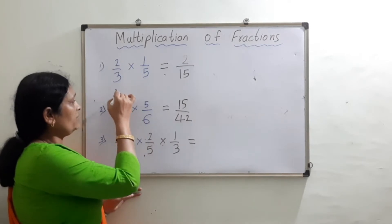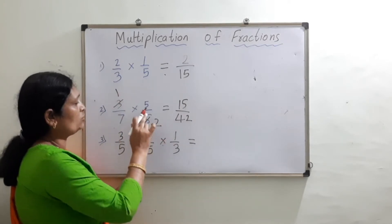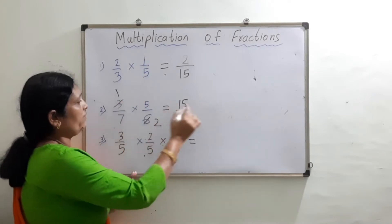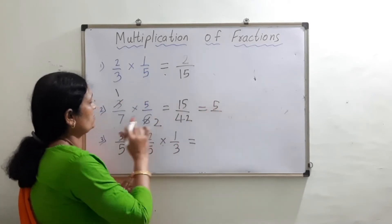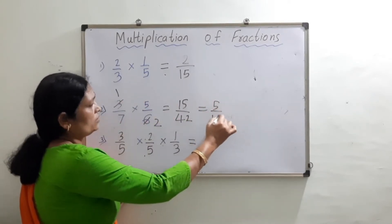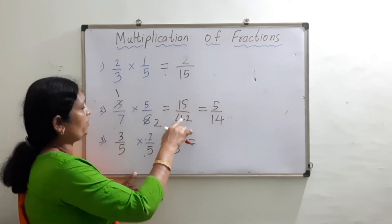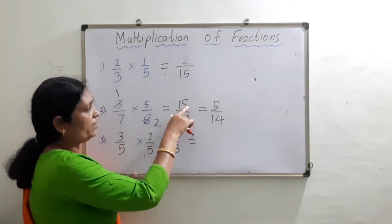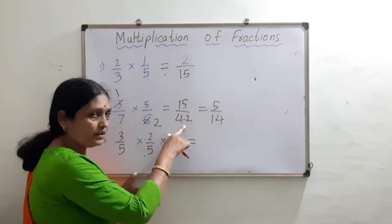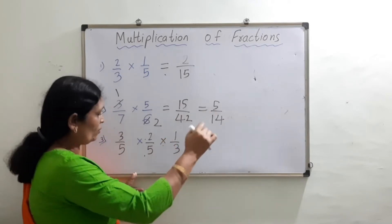If I simplify it, I can divide 3 by 3. 3 ones are 3, 3 twos are 6, so I can get 5. 1 into 5 is 5, and 7 into 2 is 14. Same thing can be done over here. If I try to simplify, I can divide 15 and 42 both by 3 and I get 5 upon 14.